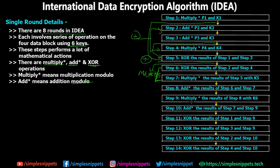Step 9: multiply modulo the result of step 8 with K6 — that is the last key, key number 6. Step 10: addition modulo the result of step 7 and step 9. Step 11: XOR the result of step 1 and step 9. Step 12: XOR the result of step 3 and step 9. Step 13: XOR the result of step 2 and step 10. Step 14: XOR the result of step 4 and step 10.